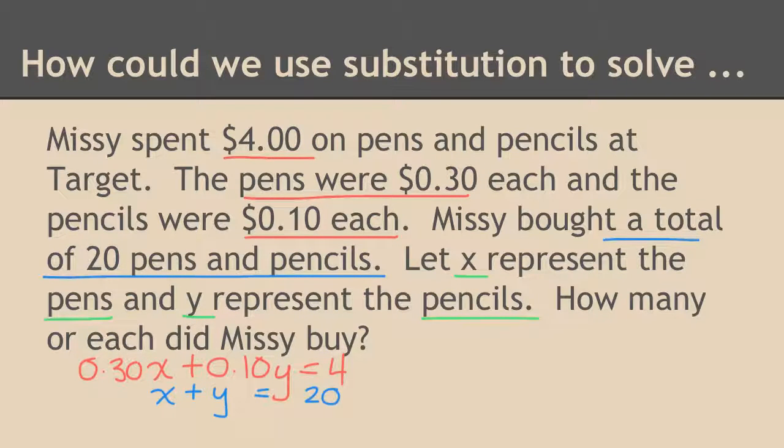So at first glance, this appears to not be a very good substitution problem because I don't know exactly what x equals or what y equals. But never fear. I could alter this equation either for whatever I want x to equal or for whatever I want y to equal. So I'm going to say that I want x by itself. Although I could easily have said I want y by itself. I'm going to go the x method. So I'm going to subtract y from both sides.